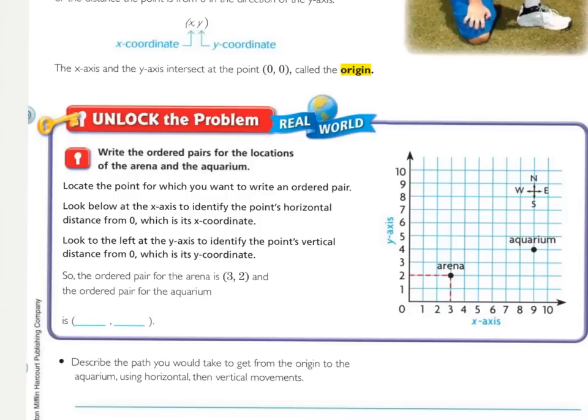Then, the next step is to find the y-axis and how far is it up or down. Here's my dot. If I come over to the y-axis, I can see that I've gone up 2. So, that's my second number. You can see that right here, the ordered pair for the arena is 3, 2, because we went over 3 and then up 2.